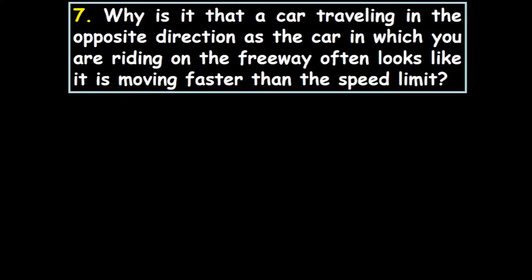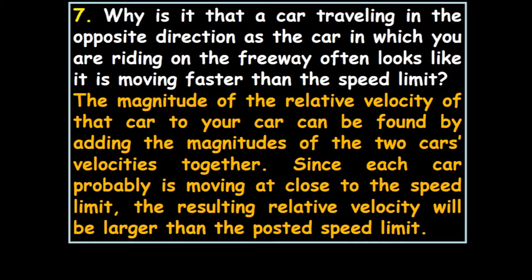Why is it that a car traveling in the opposite direction as the car in which you are riding on the freeway often looks like it is moving faster? The relative velocity of that car and your car can be fast. Since each car probably is moving at close to the speed limit, the resulting relative velocity will be larger.